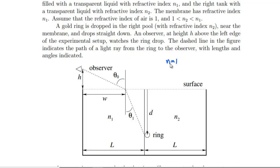So n is one up the top, and n2 is less than n1. That means we're going to move towards the normal when we hit, as I've marked here, and then away from the normal when we hit at this point. The gold ring is dropped in the right pool near the membrane, it drops straight down. An observer at height h above the left edge watches the ring drop. The dashed line indicates the path of the light ray from the ring to the observer.